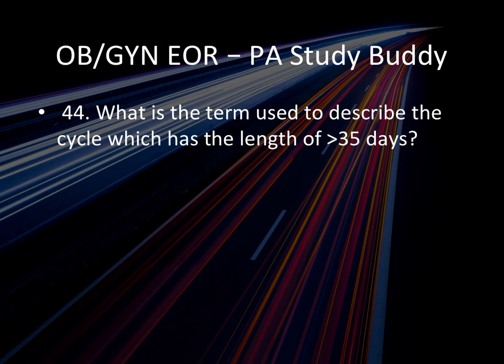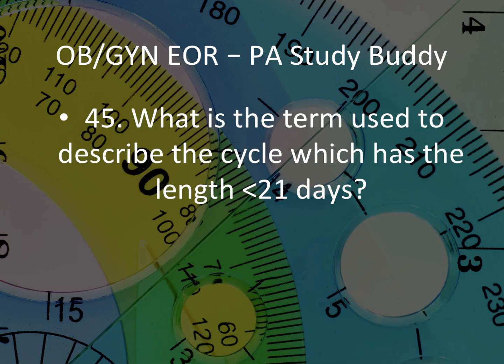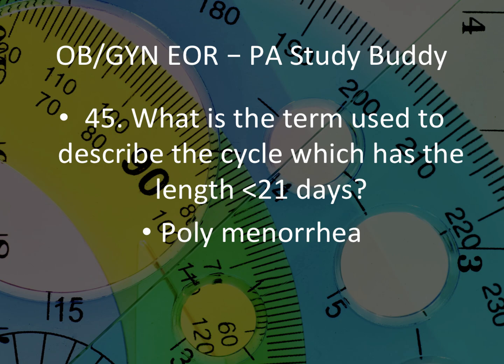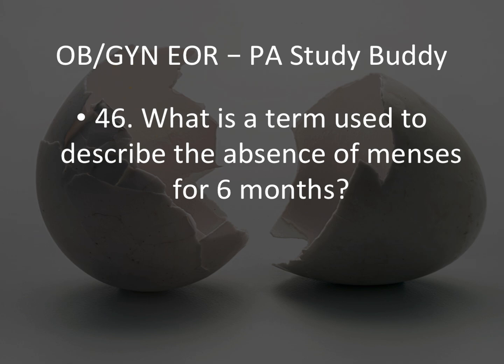Question 44: What is the term used to describe a cycle with a length greater than 35 days? That would be oligomenorrhea. Question 45: What is the term used to describe the absence of menses for six months? Amenorrhea. Absence of menses for greater than six months is amenorrhea.